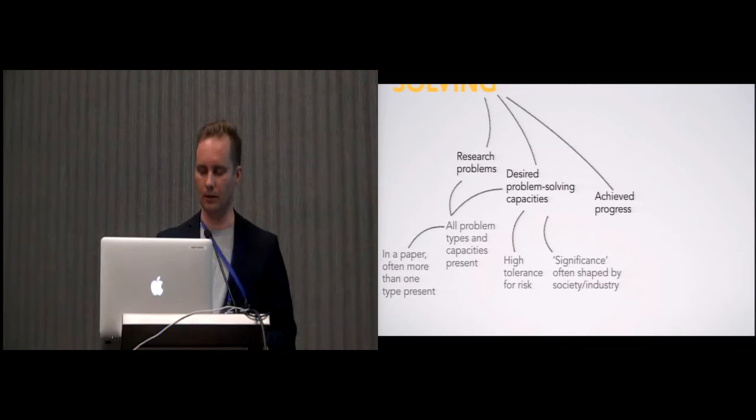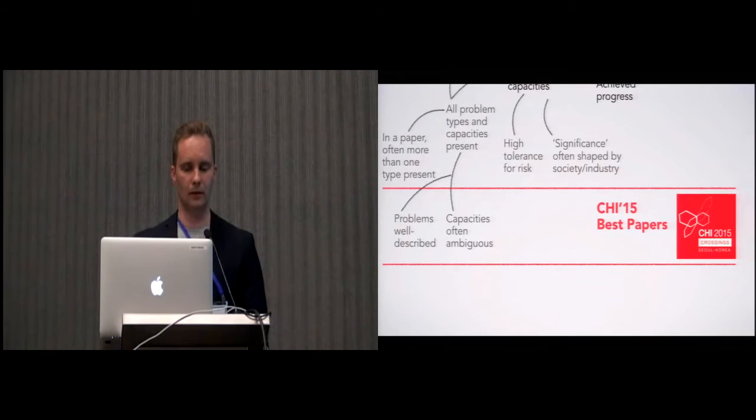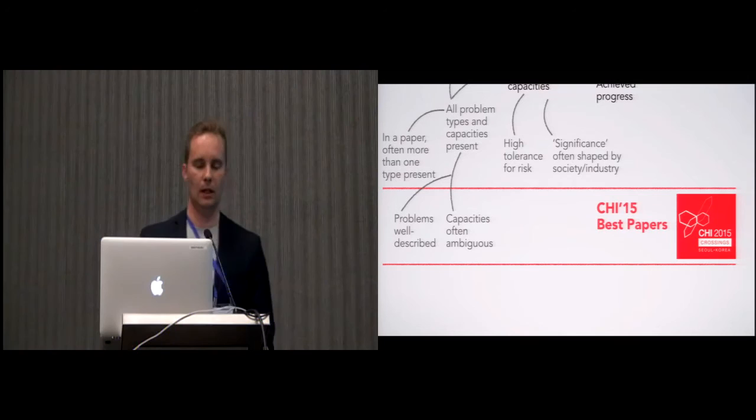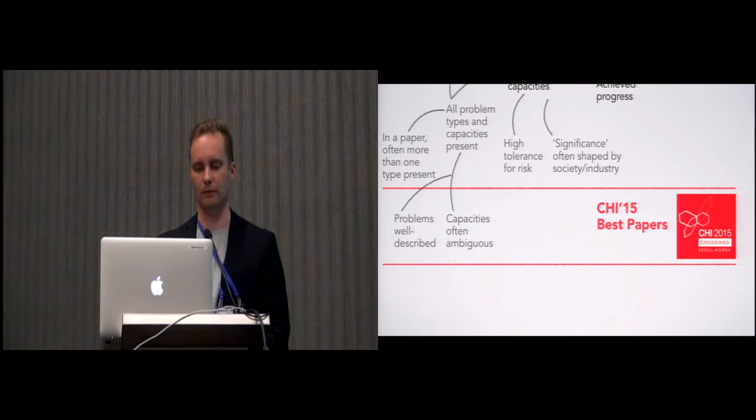And then we want to learn more and dive deeper into these papers. So, we analyzed the best papers from last year's CHI and first made a couple of observations on how they are written, basically writing culture that we have. It seems that the problems, per se, they are typically well described, whereas the capacities are often ambiguously described. So, we can improve in that respect.